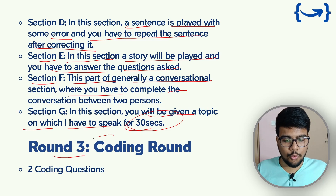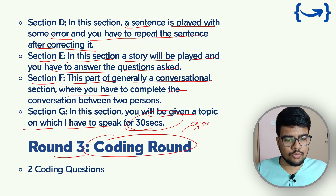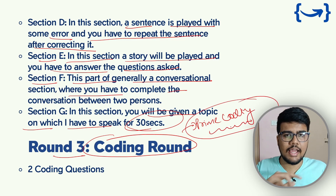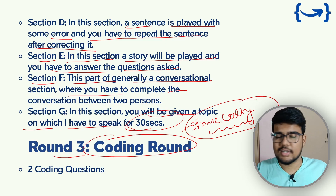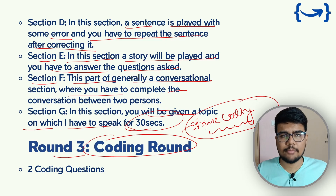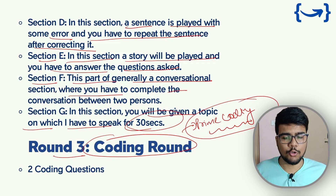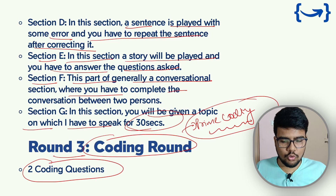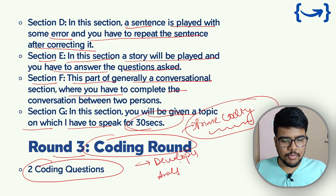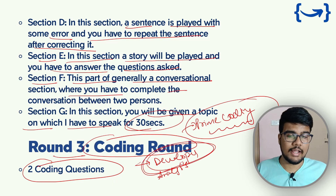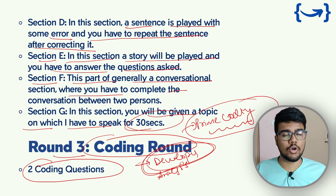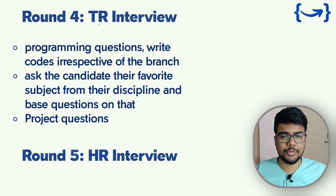Round three is the coding round, where Prime Coding really comes into the picture. Solutions for every coding round — whether Infosys, Accenture, TCS, IBM, Cognizant, or Capgemini — are available on our channel. For the developer or analyst role, two coding questions will be given. Make sure you solve both well to appear for the developer role. MindTree is also known for a good work-life balance.